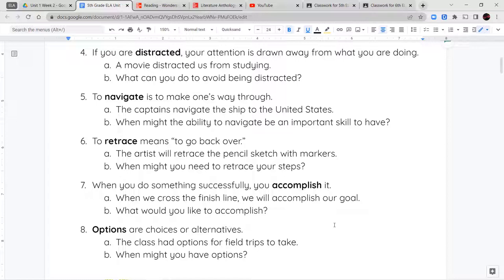Number seven is the word accomplish. When you do something successfully, you accomplish it. When you cross the finish line, you accomplish your goal. So if you were in a race and you've crossed over the finish line, you've now accomplished that goal. You've done it successfully. What would you like to accomplish? What are some goals that you have that you would like to reach?